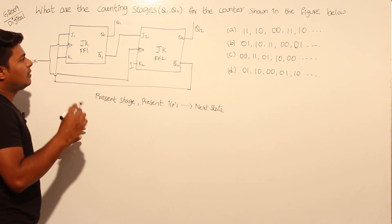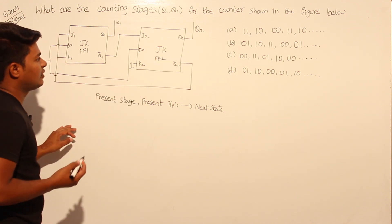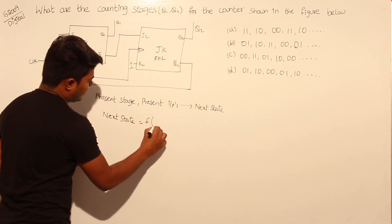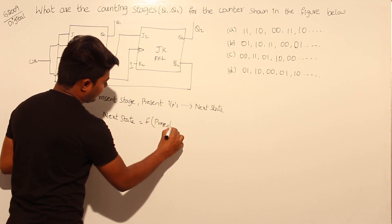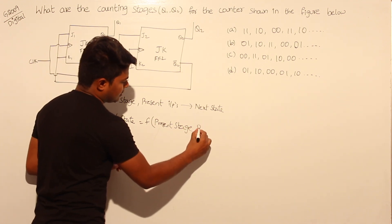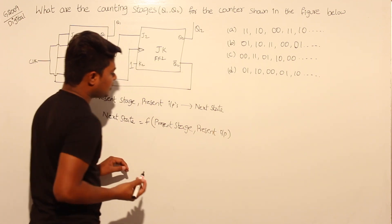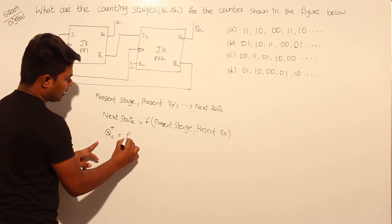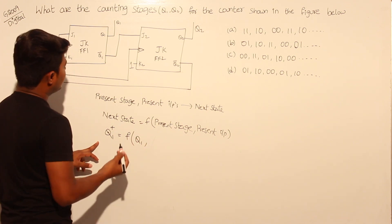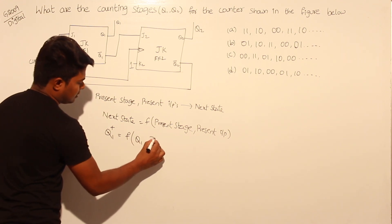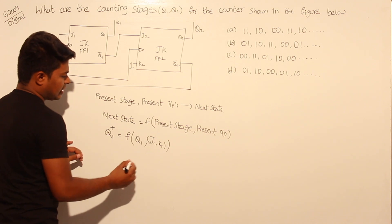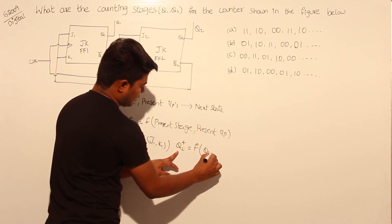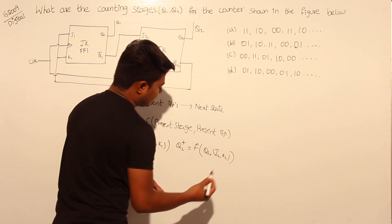Q1 is the present state; Q1-plus will be the next state. Similarly, Q2 is the present state and Q2-plus will be the next state. The next state is a function of present state and present inputs. So we can write: Q1-plus equals a function of present state Q1 and present inputs J1, K1. Similarly, Q2-plus equals a function of Q2 and present inputs J2, K2.